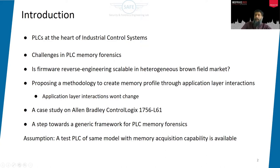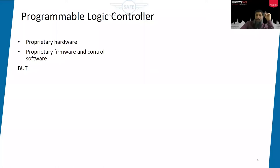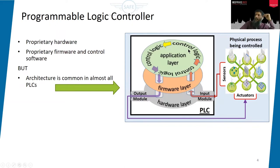Programmable logic controllers have a lot of proprietary hardware, firmware, and control software, but the architecture and function are usually similar. This is how a PLC functional diagram looks: we have a hardware layer controlled through firmware, and on top of that is an application, usually called control logic in ICS. The hardware has input modules connected to sensors from a physical process, and output modules connected to actuators.